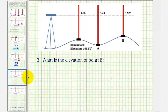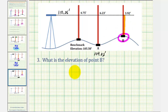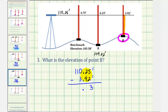Now we'll find the elevation at point B. To find the elevation at this point, we'll take the height of the instrument and subtract the reading of 3.92 feet, which is this distance here — that gives us the elevation at point B. So we have 110.25 feet minus 3.92 feet. Bring down the decimal point and subtract from right to left. Five minus 2 is 3. We borrow from the tens place: change the 1 to a zero, giving 9 in the ones and 12 in the tenths. Twelve minus 9 is 3; 9 minus 3 is 6.